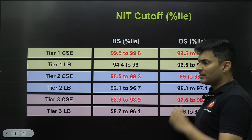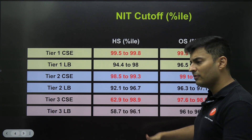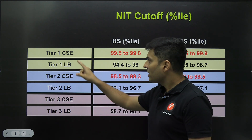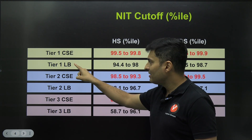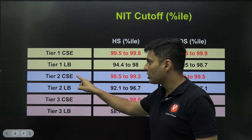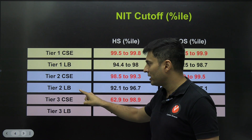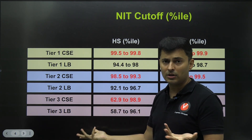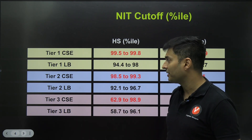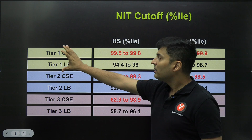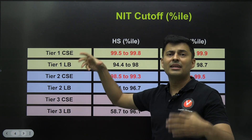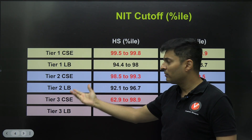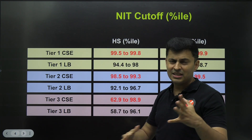Computer science lowest branch — LB stands for lowest branch, CSE stands for computer science engineering. Tier one NITs include Trichi, Surat, Kharagpur, and similar institutions, then you have tier two and tier three which are the newly formed NITs with very low cutoffs.